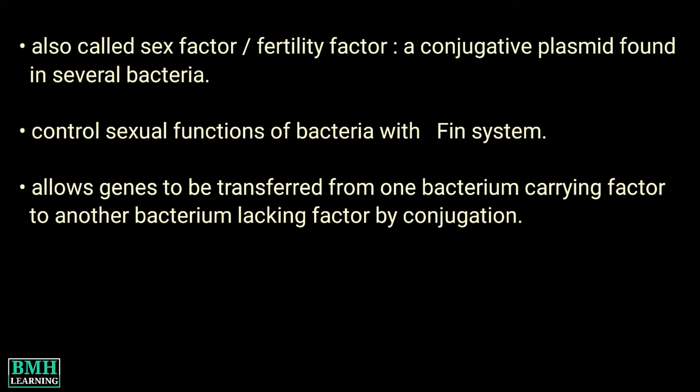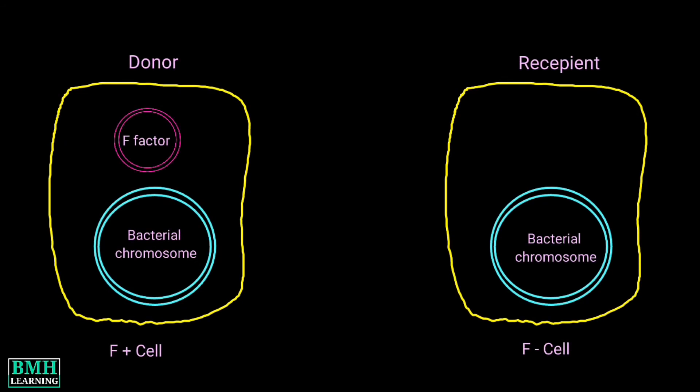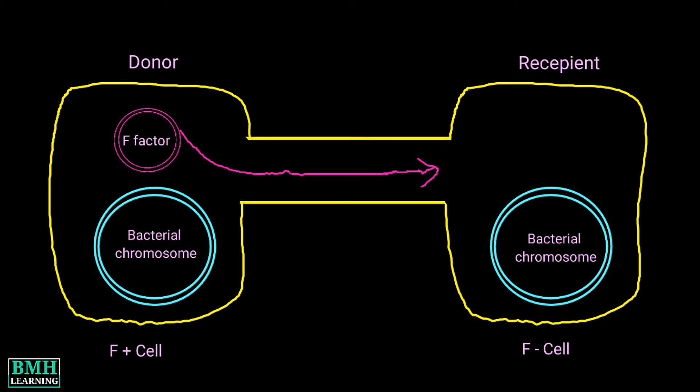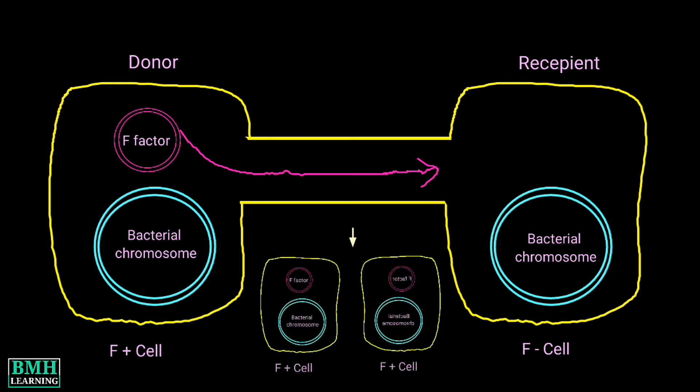It allows genes to be transferred from one bacterium carrying the factor to another bacterium lacking the factor by conjugation. The cell possessing the F factor is designated as F positive and acts as donor. A cell devoid of this factor is designated as F negative and acts as recipient. When an F positive cell conjugates with an F negative cell, the result is two F positive cells, both capable of transmitting the plasmid to other F negative cells by conjugation.